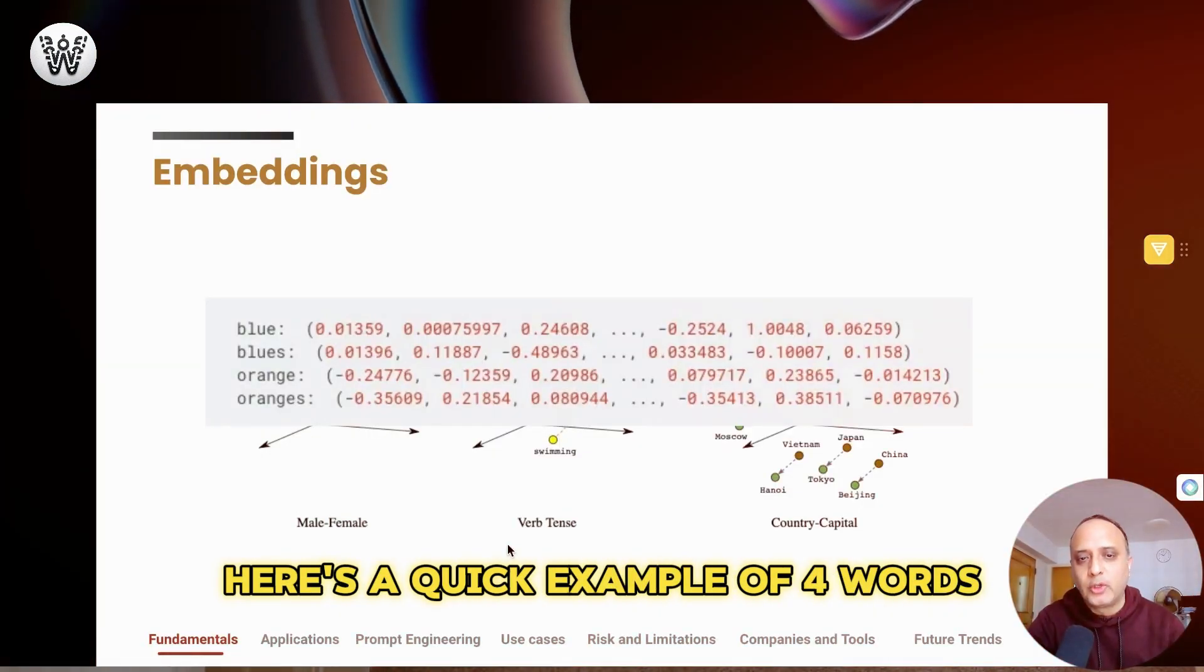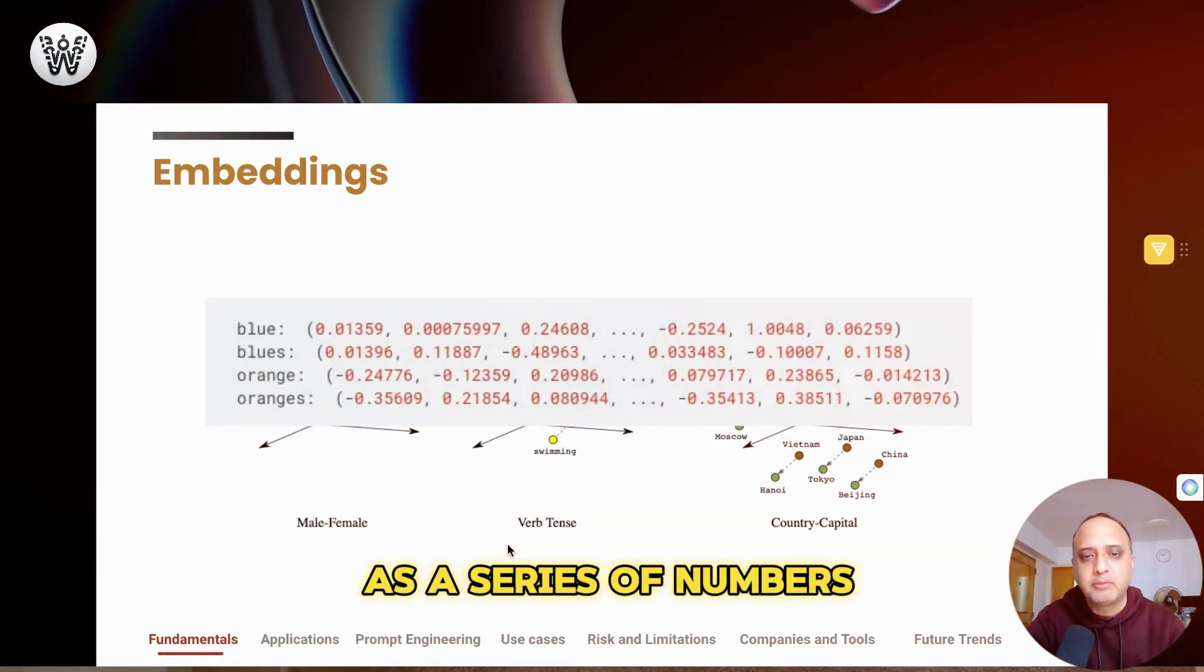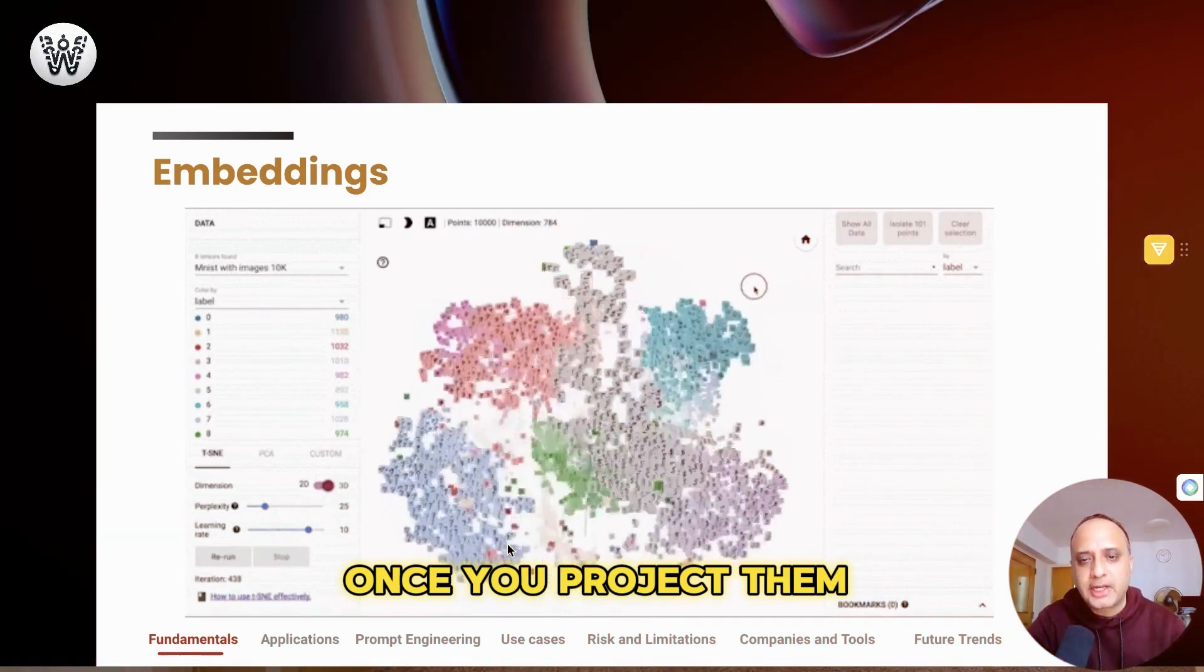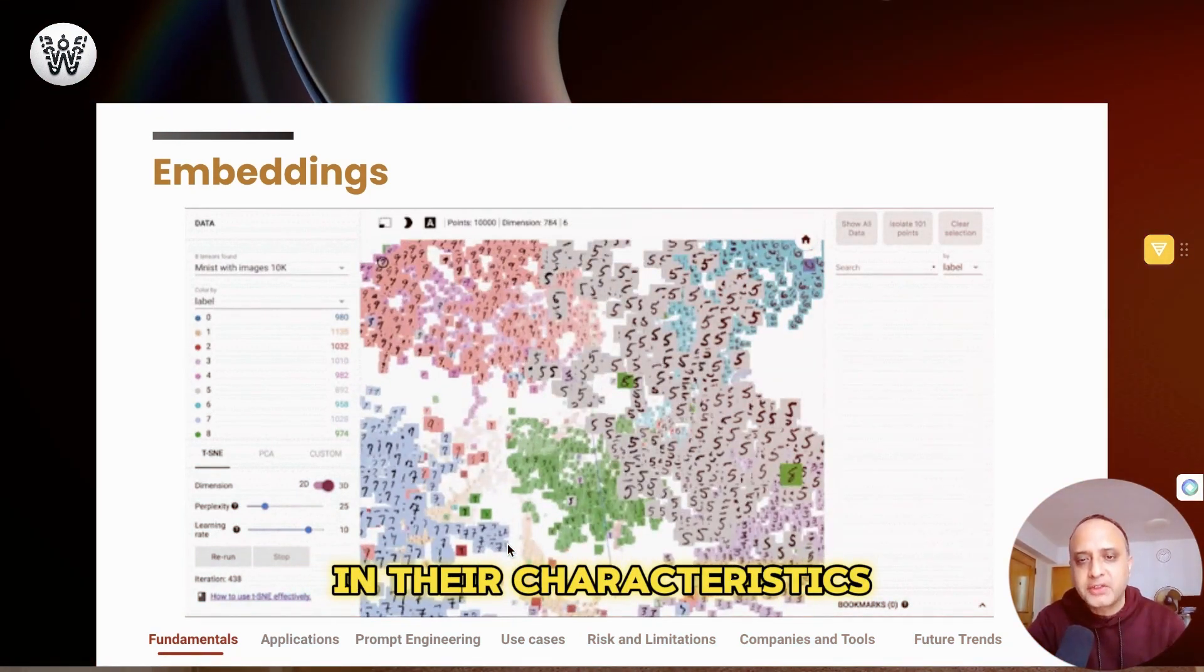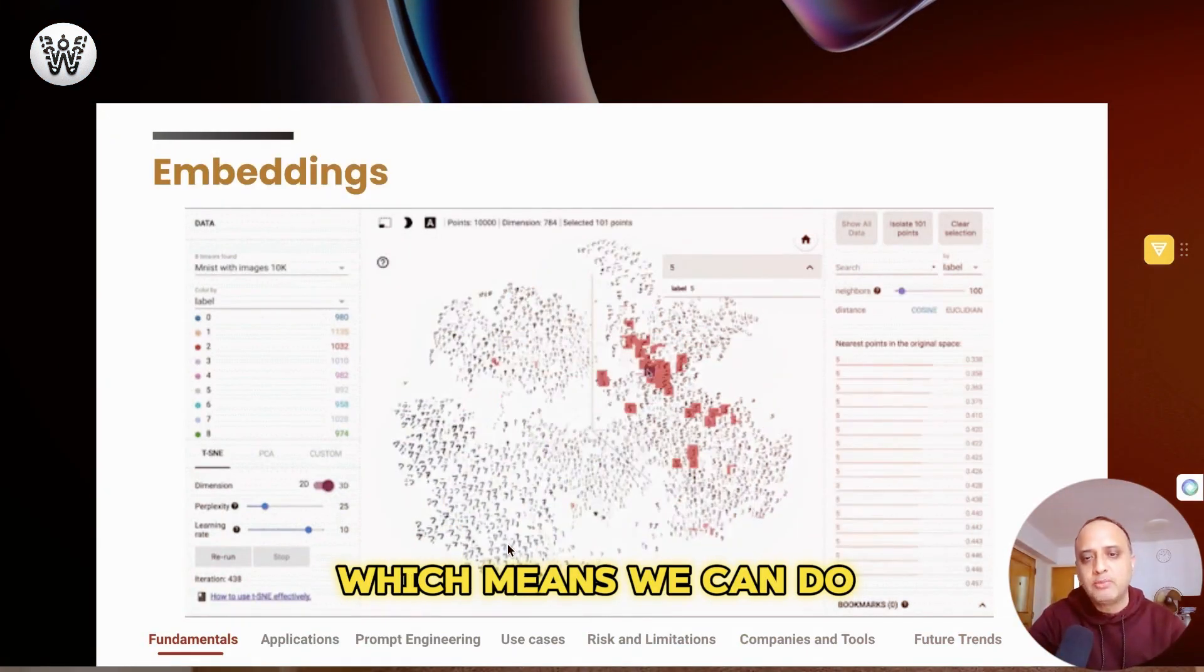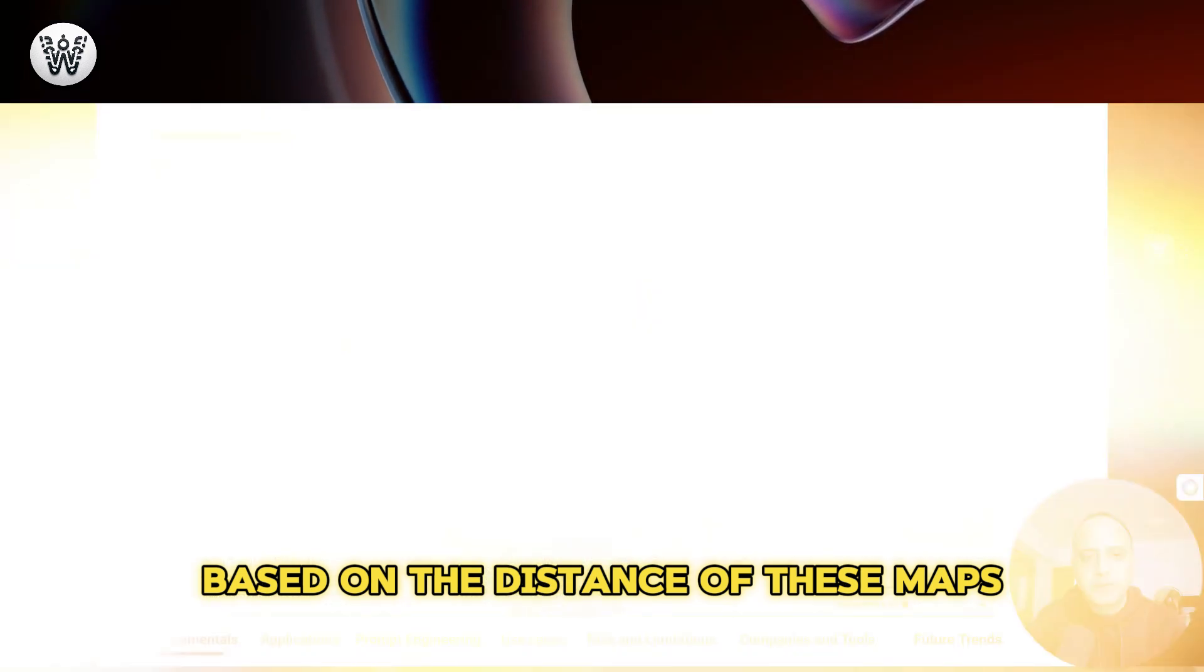Here's a quick example of four words, each represented as a series of numbers, and what is interesting about these vectors is once you project them into this multi-dimensional space, vectors which are similar in their characteristics are often clustered together or grouped together, which means we can do mathematical calculations and find similarities and meanings based on the distance of these pairs.